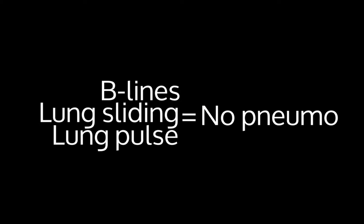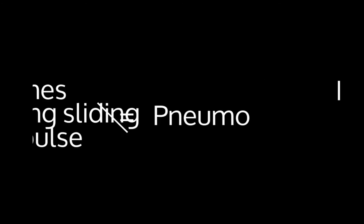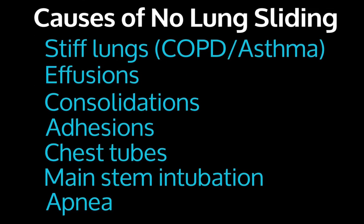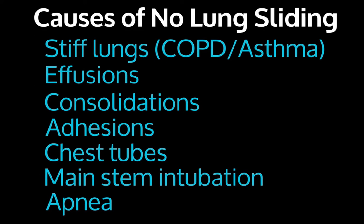B-lines, lung sliding, and lung pulse will all rule out pneumothorax in the area you're evaluating. But does the absence of those things definitely rule in a pneumothorax every time? No. There are things that cause lack of lung sliding besides pneumothorax — a really bad asthmatic who you have to intubate may have no air movement at all. Effusions, consolidations, and adhesions — if the pleural layers are stuck together, they won't slide. We already talked about mainstem intubation, and if the patient isn't breathing, they won't have good lung sliding.